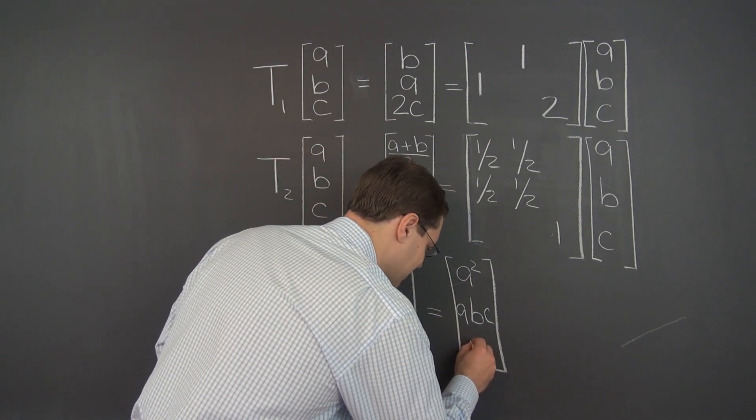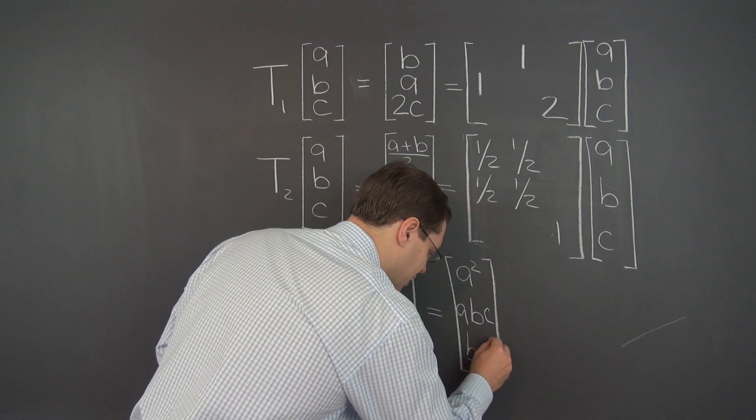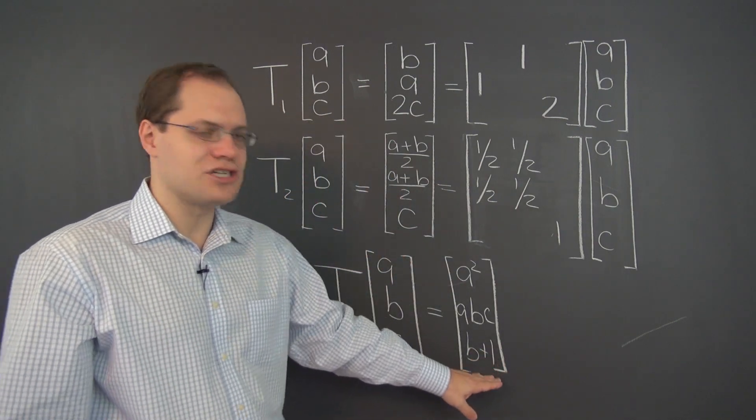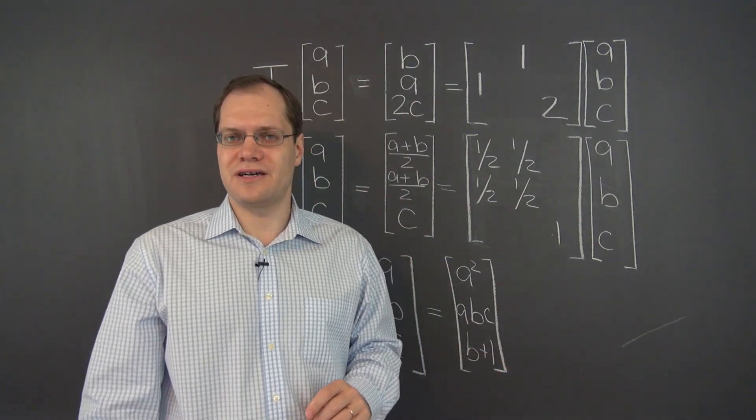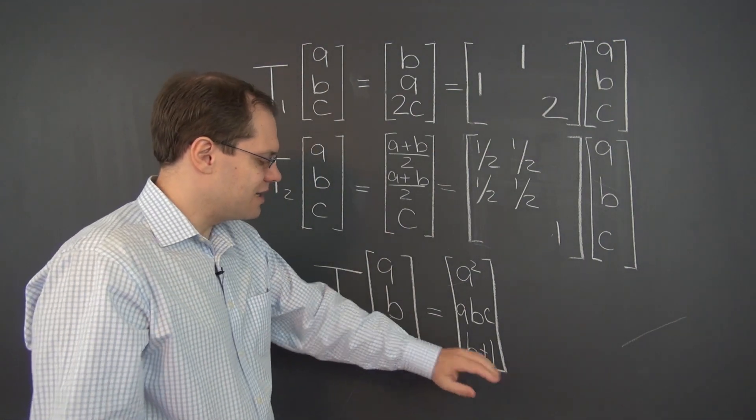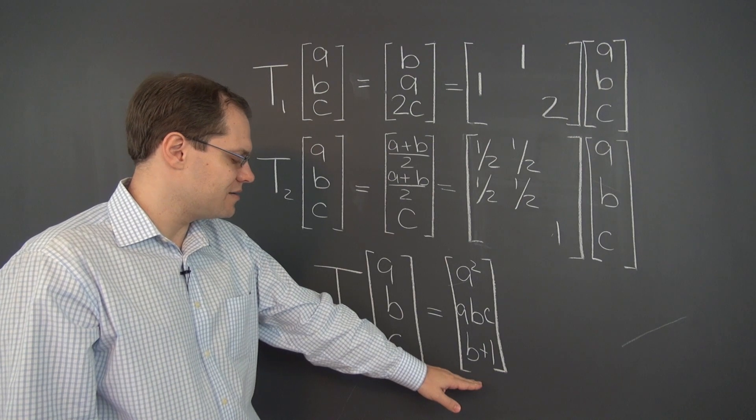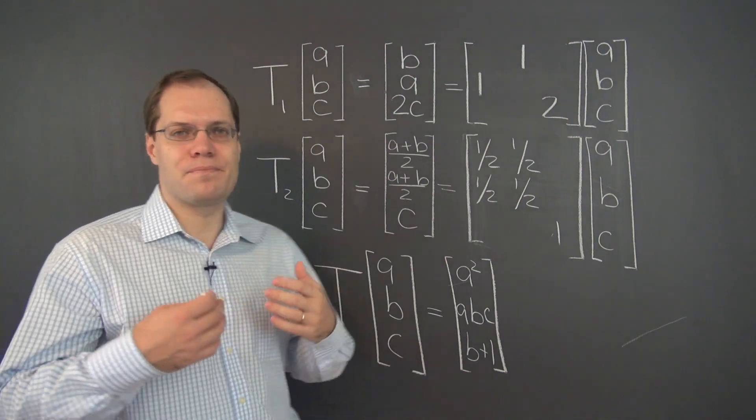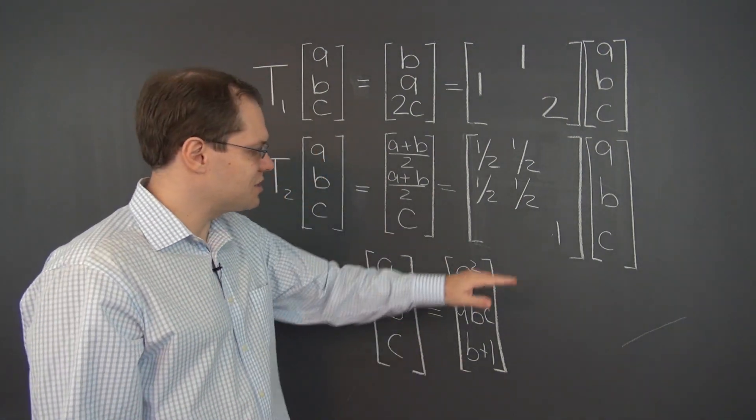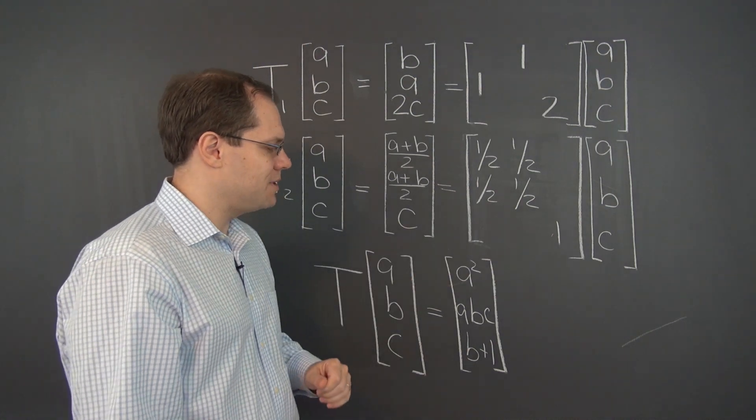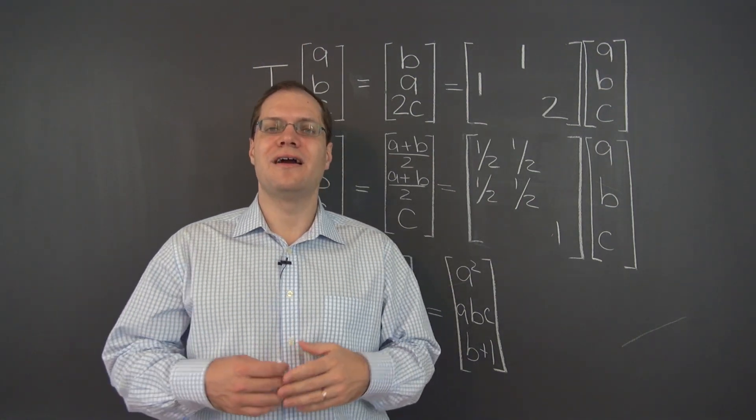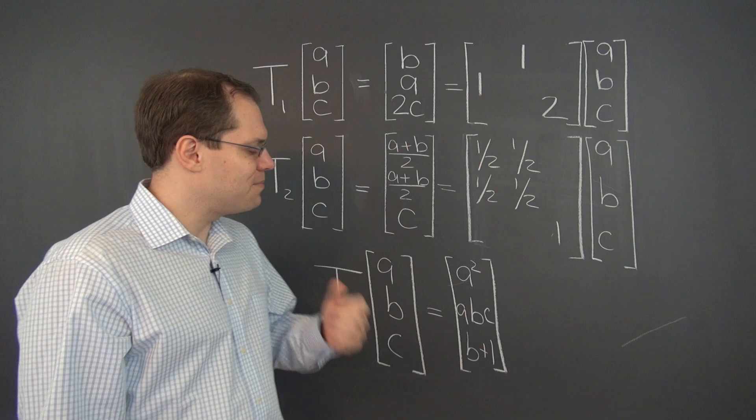And something as innocent looking as B plus 1, this would be akin to a shift or translation of geometric vectors and causes non-linearity in its own way that you're familiar with. So that's just some examples of non-linear. But the point here is that all linear transformations can be represented by matrices. And that should be a very liberating and positive thought.